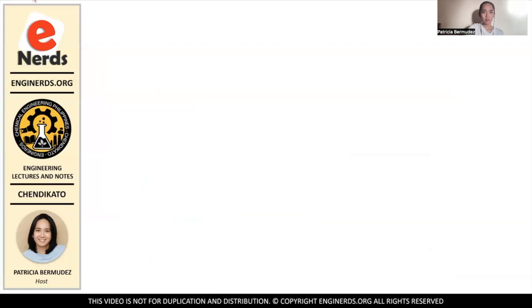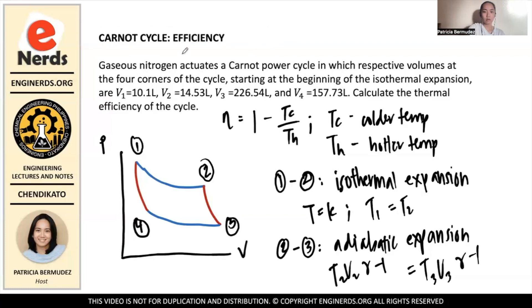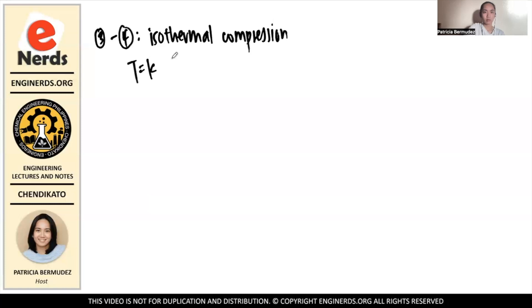And then from three to four, it goes through, again, isothermal. But it's not expansion, but compression. Still, the temperature here is constant. And the temperature at points three and four is constant. So therefore, T3 is equal to T4.